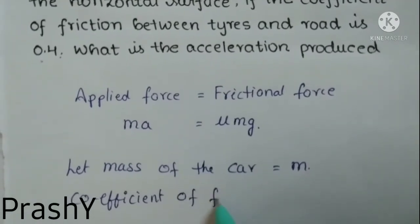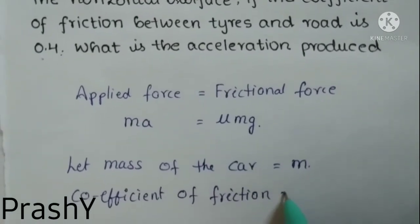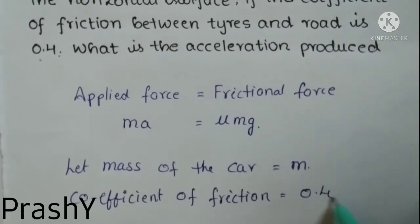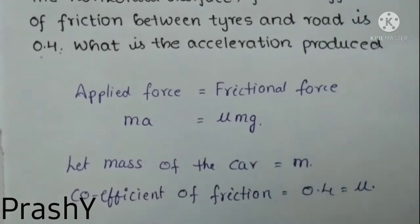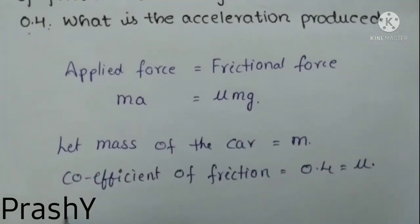Now, acceleration due to gravity g is equal to, let us take 9.8 meters per second squared.